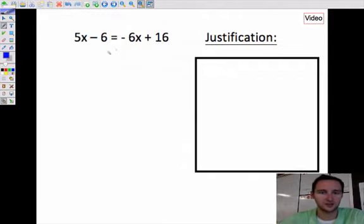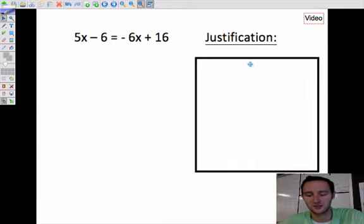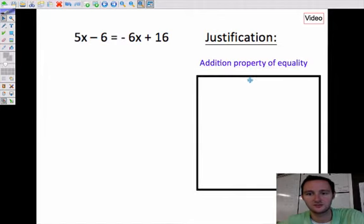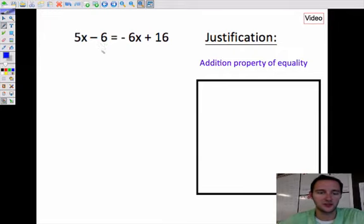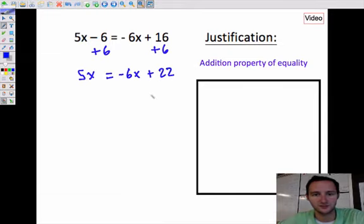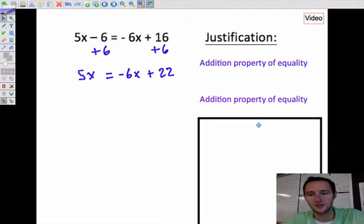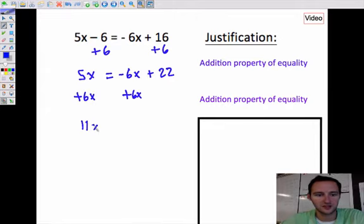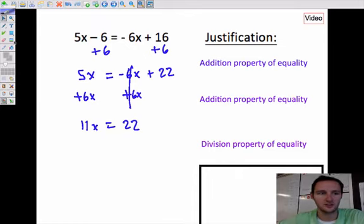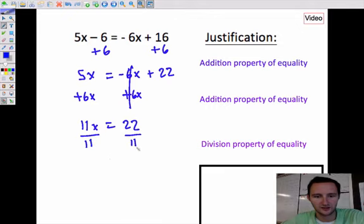Here is your first example. I have the justification over here - you don't have to write this down, this is just so that you know I'm not cheating or using any non-rules. First is addition property of equality. I'm going to get rid of this minus 6 by adding 6 to both sides. That gives me 5x equals negative 6x plus 22. Next I'm going to add 6x to both sides. That gives me 11x equals 22. My last step is division - I'm going to divide by the coefficient of x, which is 11, and get x equals 2.